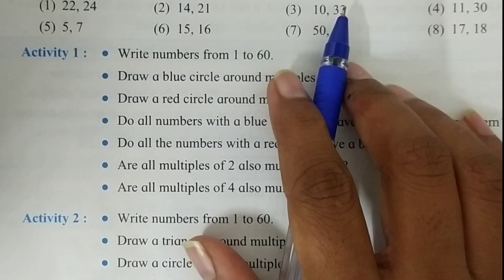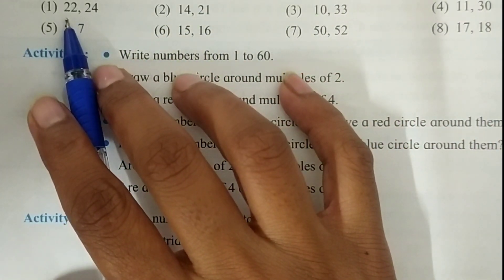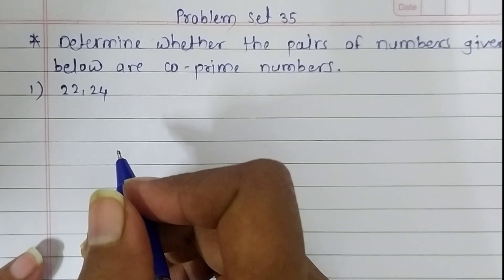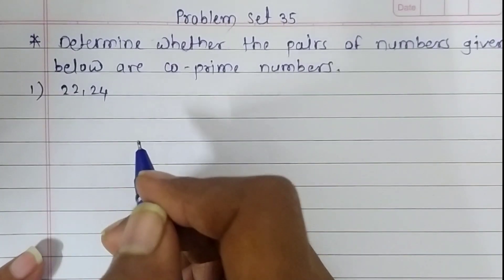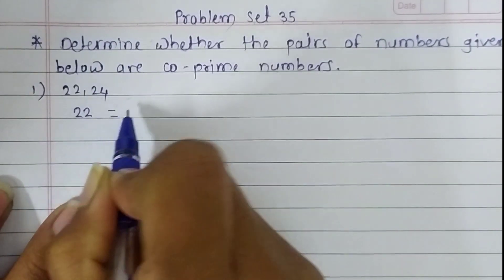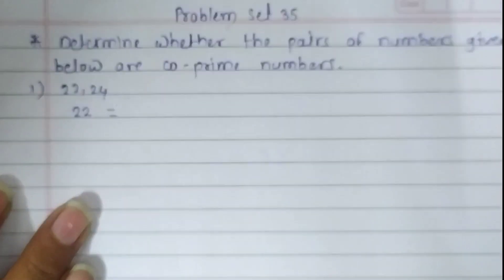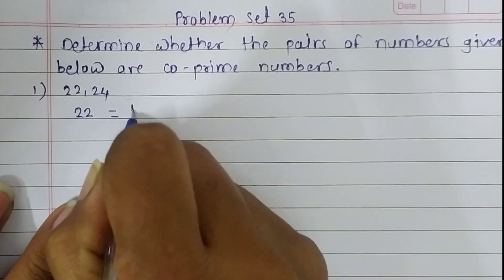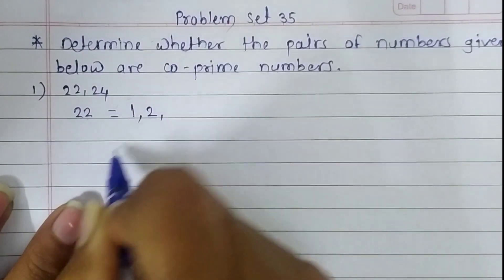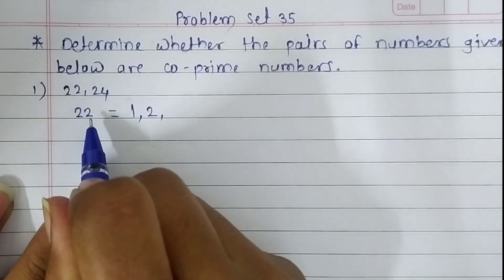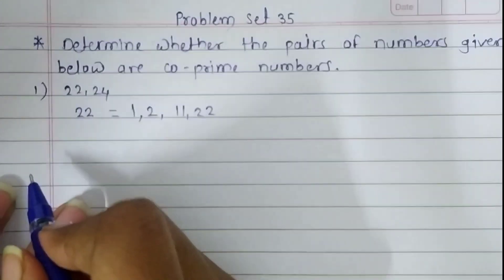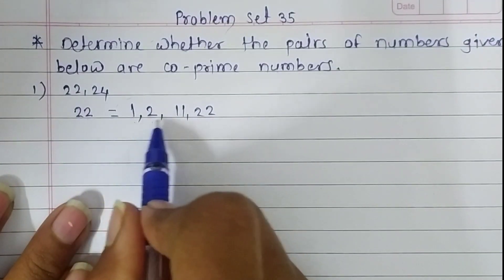Let's solve our first question: 22 and 24. To determine whether they are co-prime, we have to write the factors of each number. The factors of 22 are 1, 2, 11, and 22.